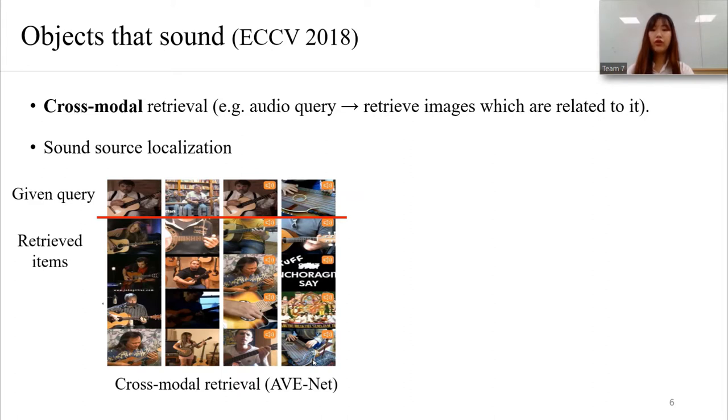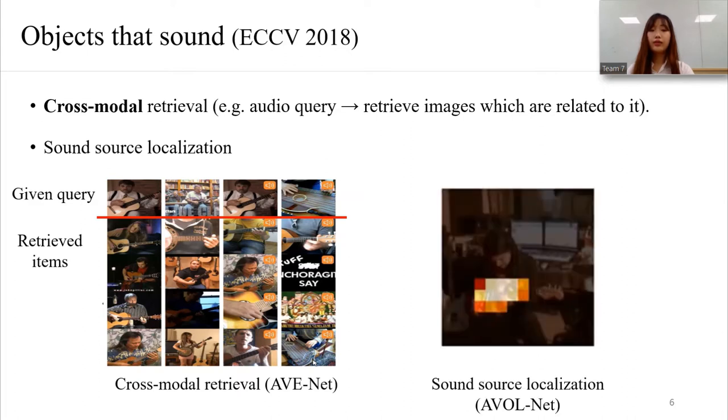For example, if we give audio sample query to the network, the AVE network can retrieve images which are likely to make that sound. The other one is sound source localization. The AVOL network can highlight the object that makes sound in the image.